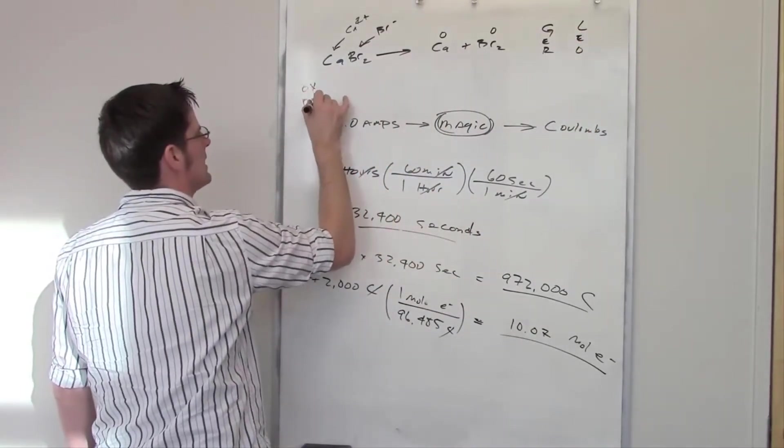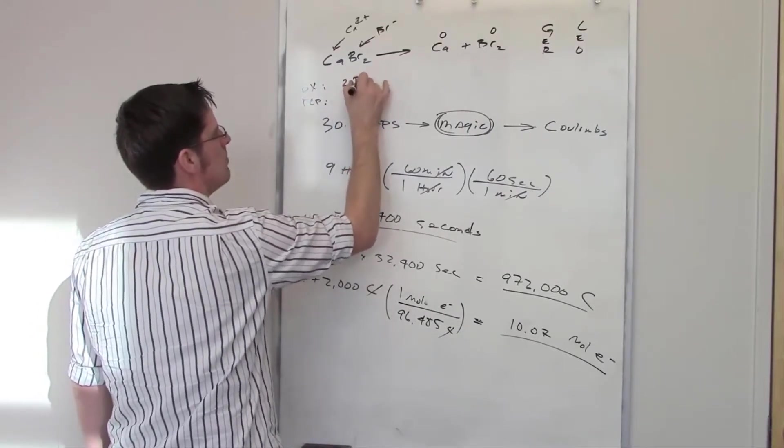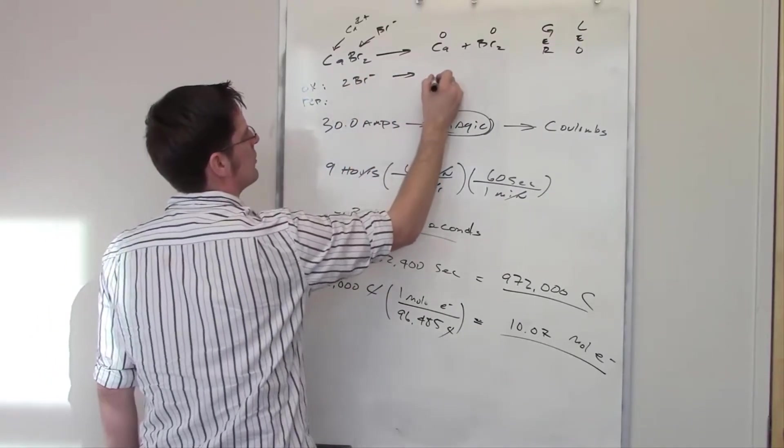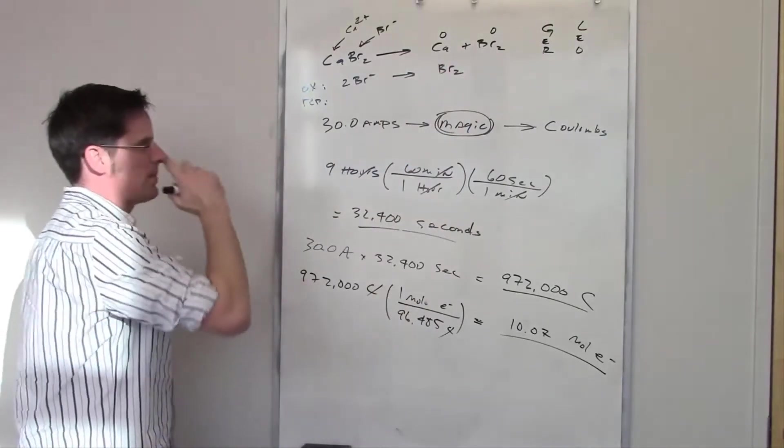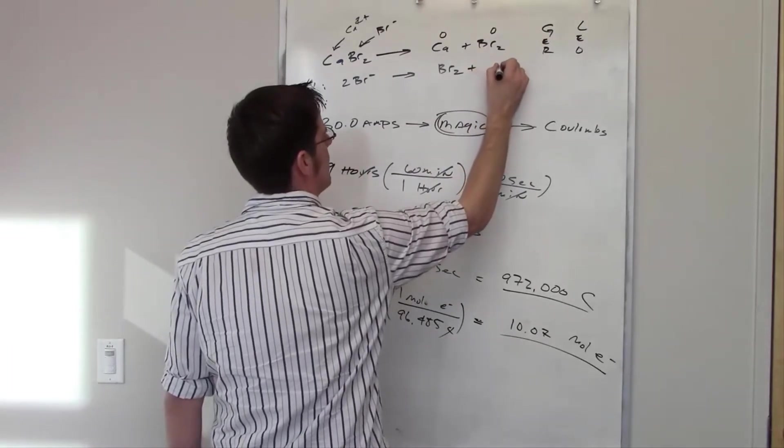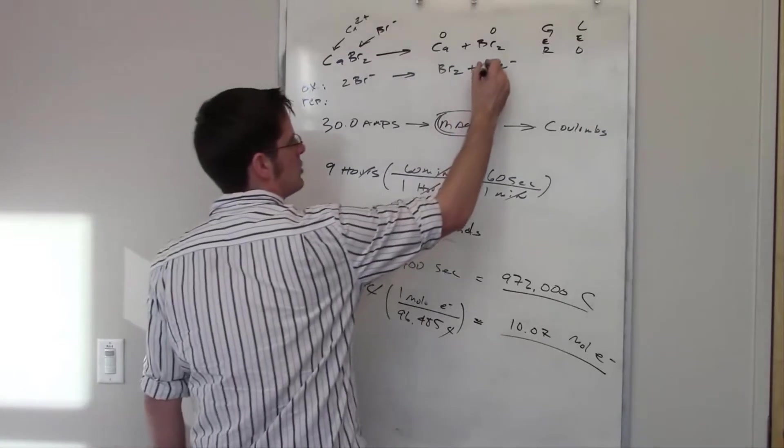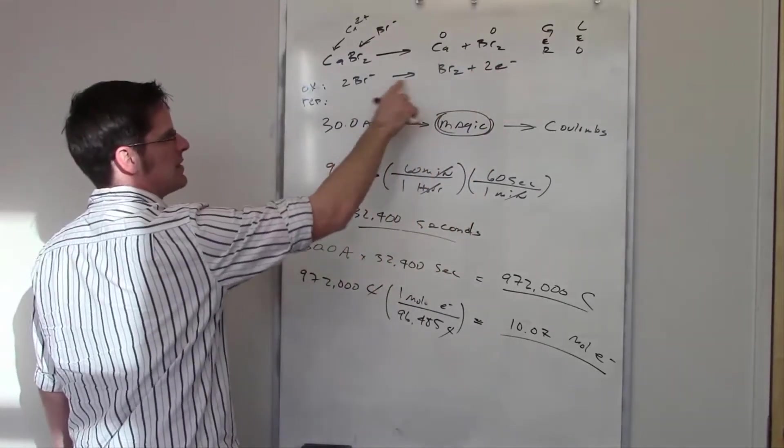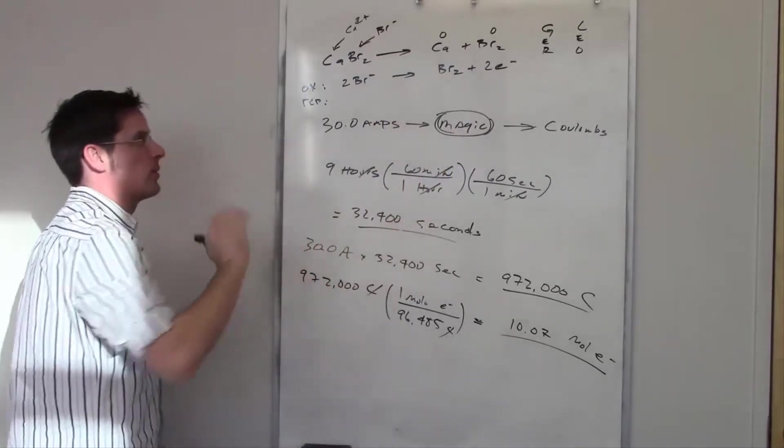So I can write down my oxidation and my reduction. My oxidation half-reaction is going to be two moles of Br⁻ combining to form Br₂. My electrons of course have to go here on this side, so it's spitting out electrons. How many moles of electrons does it spit out? Well, it has to spit out two moles of electrons in order to balance that charge.